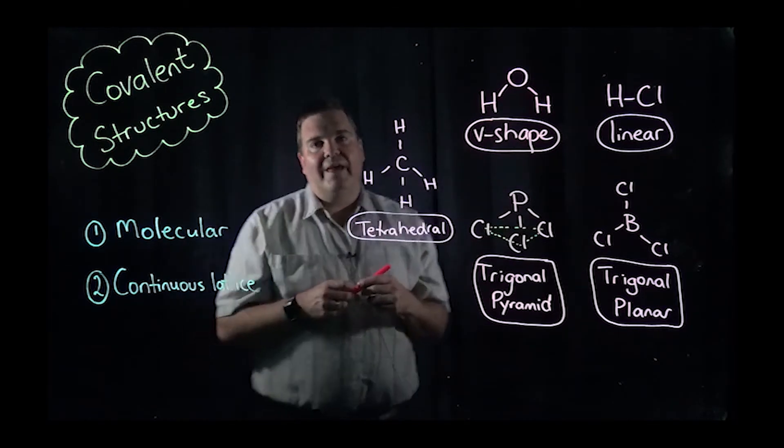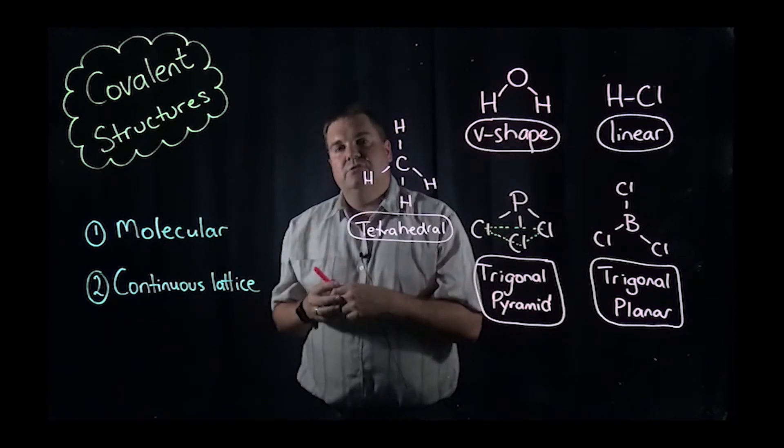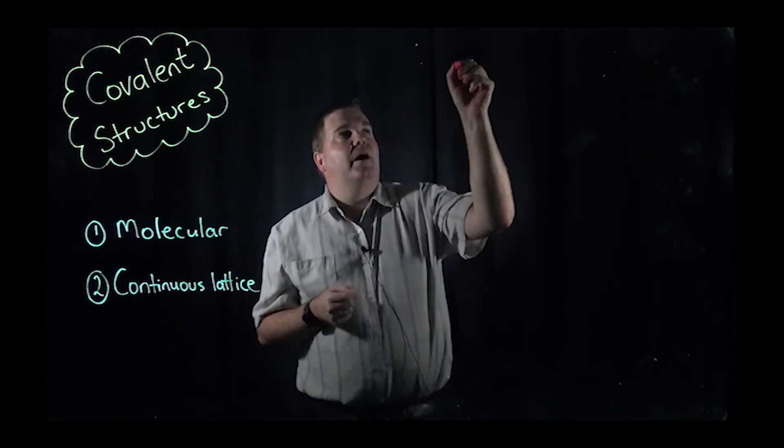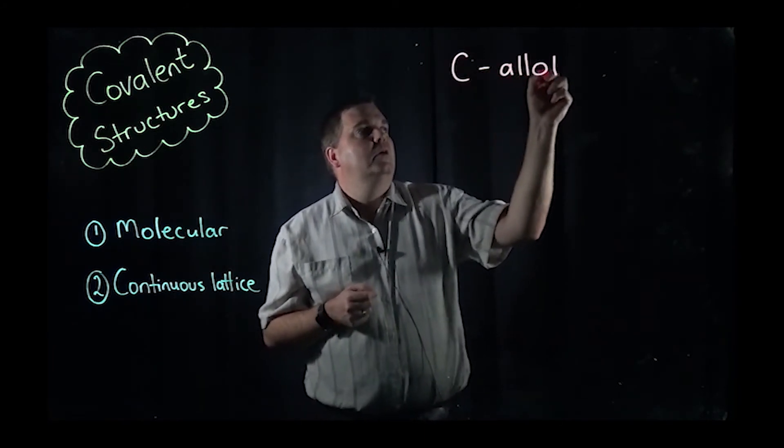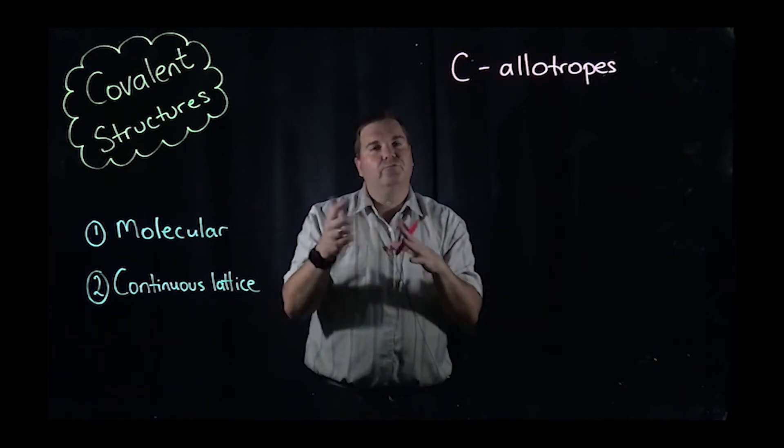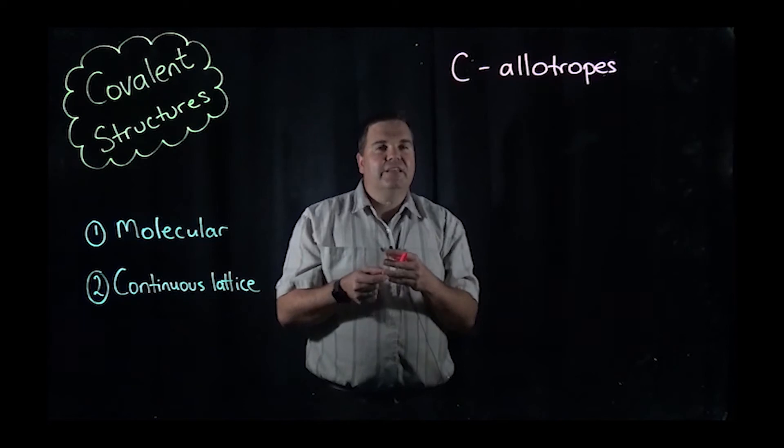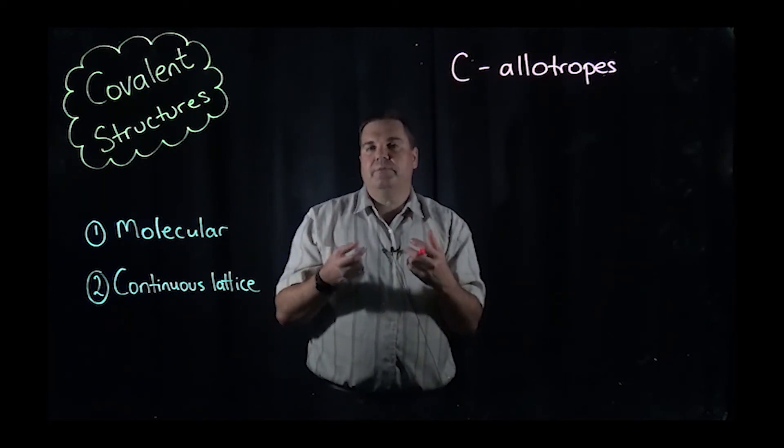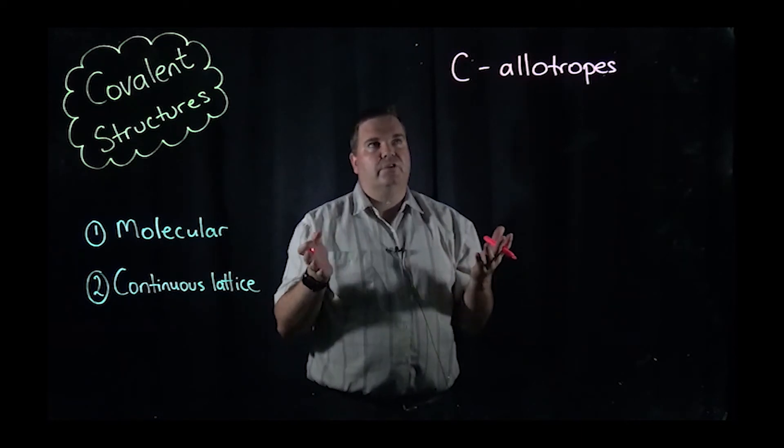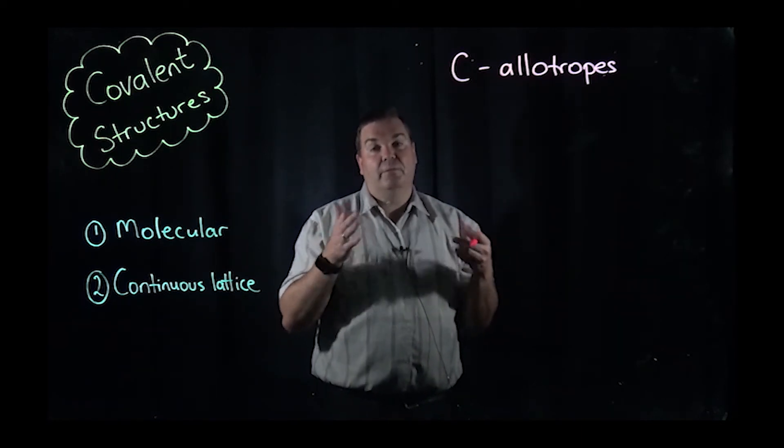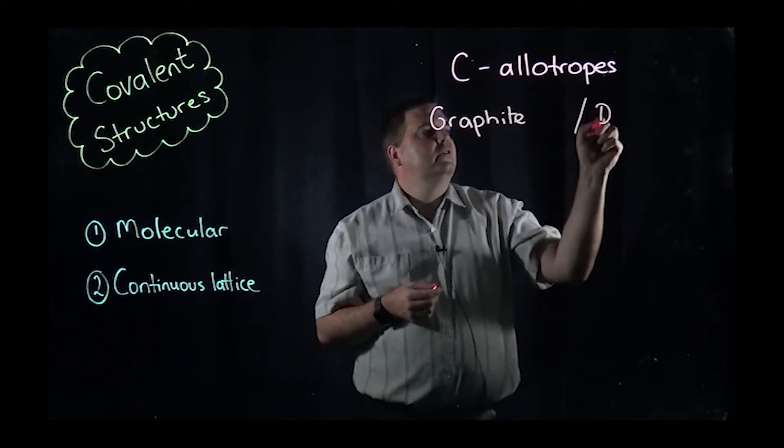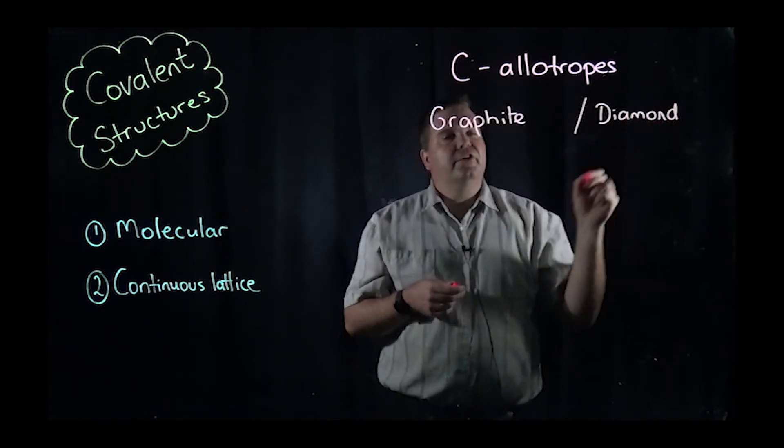So you need to learn those five shapes. But there are a couple of instances where the covalent substances exist as what's called a continuous lattice. I'm going to show you the two main examples of where they exist like that. The first continuous lattice I'm going to refer to are what we call allotropes of carbon. So carbon is in group four, it can form four bonds around it, can get a really nice tetrahedral arrangement around its central atom. This allows carbon structures to sometimes exist as three dimensional instead of just as molecules. An allotrope is something that is just a different form or a different version with a different structure.